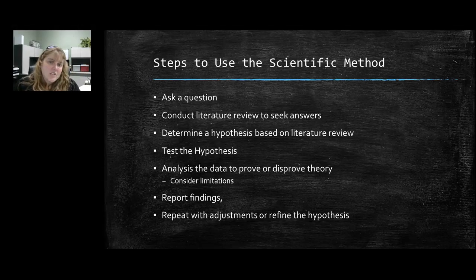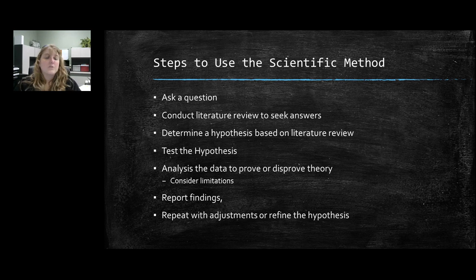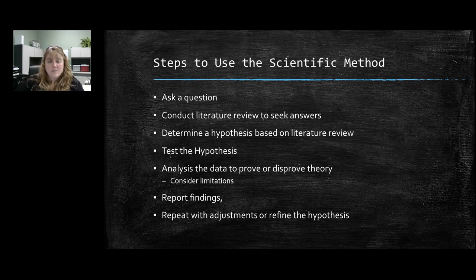The steps of the scientific method include: first, asking a question. Then you need to do some digging — conduct a literature review to seek answers to your question. Next, determine a hypothesis based on what you've found, test that hypothesis, and analyze the data collected to either prove or disprove the theory. There's also a section on considering limitations. Then you report your findings, and the best practice is to repeat the research with adjustments or refine the hypothesis based on your original findings.